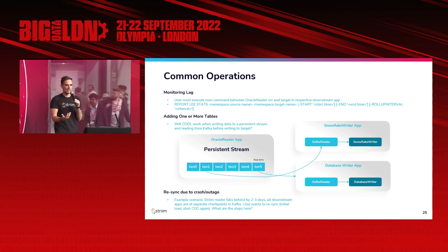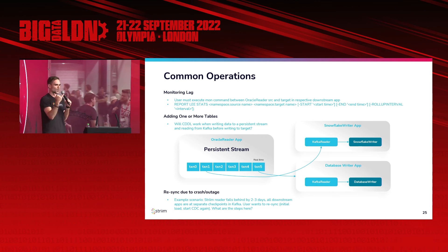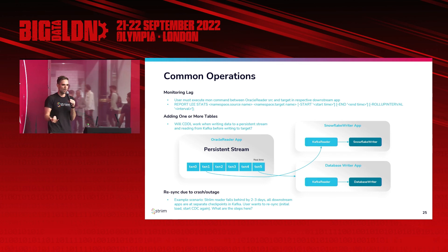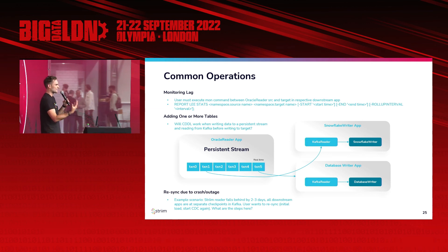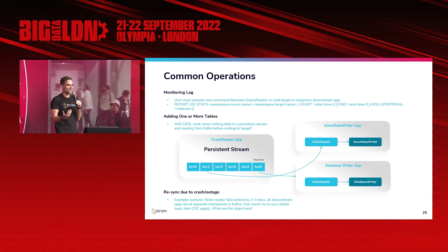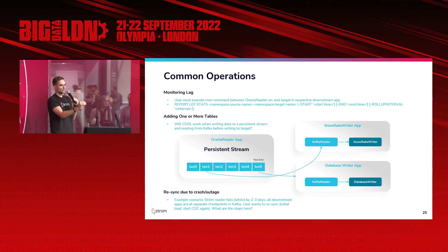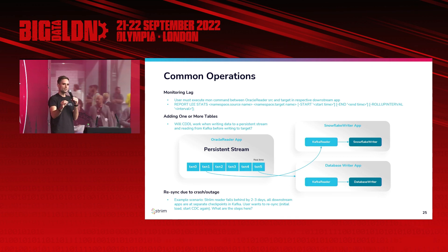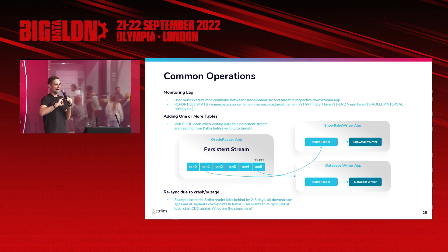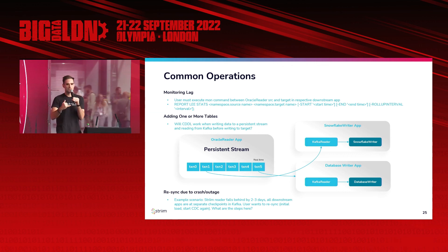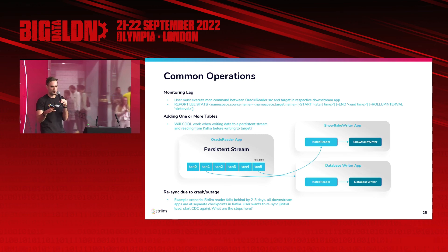Other common operations include adding tables on the fly with what we call CDDL — common DDLs such as adding tables or simple alter columns. If simple enough, schema changes can be automatically propagated to consumers that can handle it, which ties back to data contracts. Re-syncing due to a crash or outage is also supported: Stream isolates resources doing reads and writes on different compute, handles exceptions independently so one consumer going down doesn't bring down the others, and reconciliation from a failed state is completely isolated from consumers that have been online the whole time.